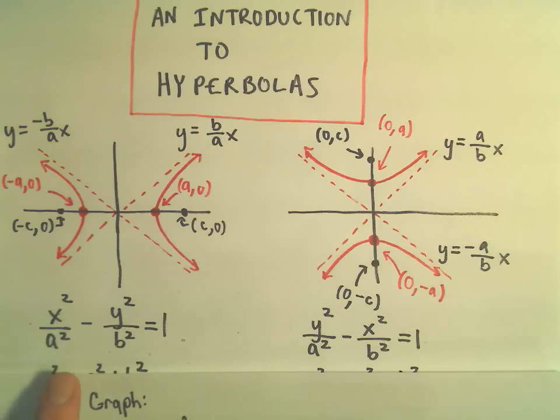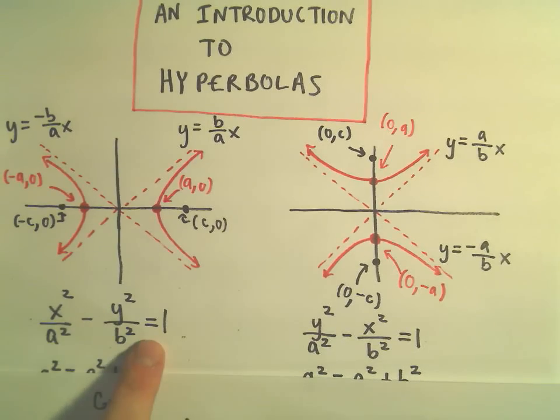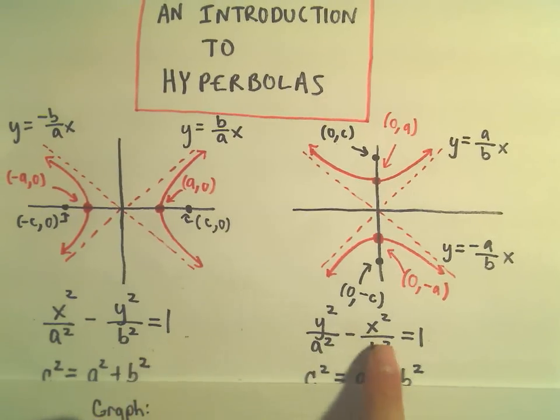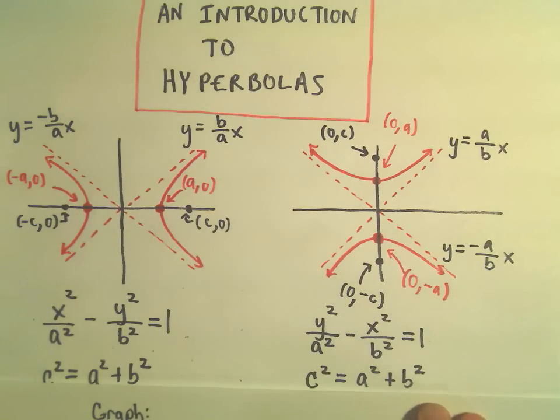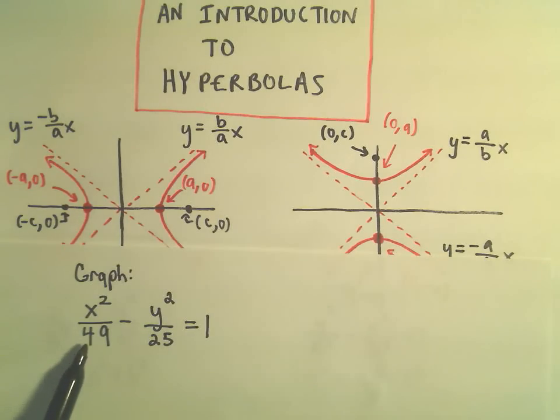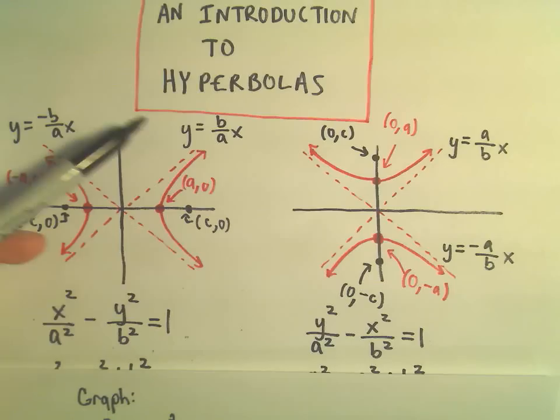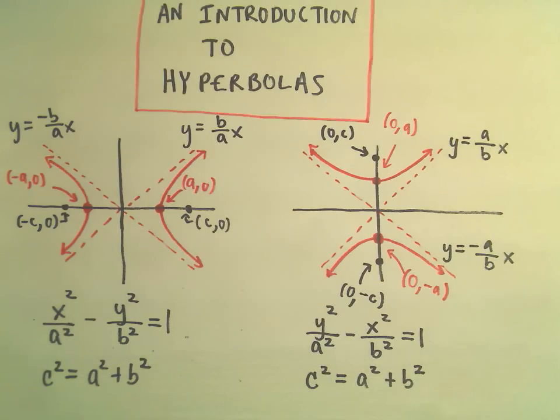Again, depending on whether you have the form x squared minus y squared equals 1, or y squared minus x squared equals 1, it's going to open in a different way. So we've got x squared minus y squared. So to me this is going to look like it opens to the left and the right.